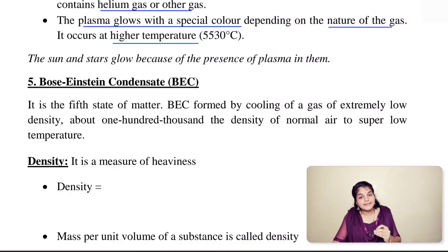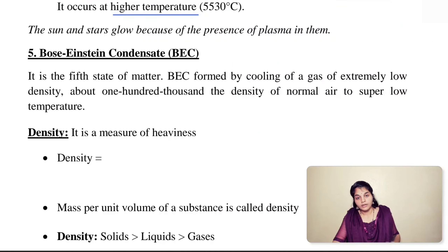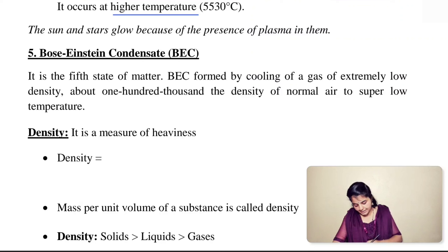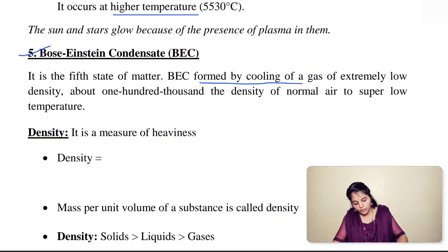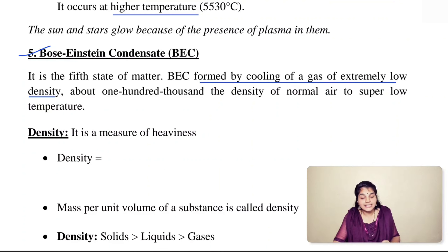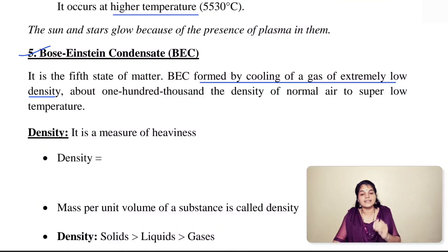The glow of the sun and stars is because of plasma present in them. The fifth state of matter is Bose-Einstein condensate (BEC). It is formed by cooling a gas of extremely low density — so a gas of low density has to be cooled in order to get BEC.